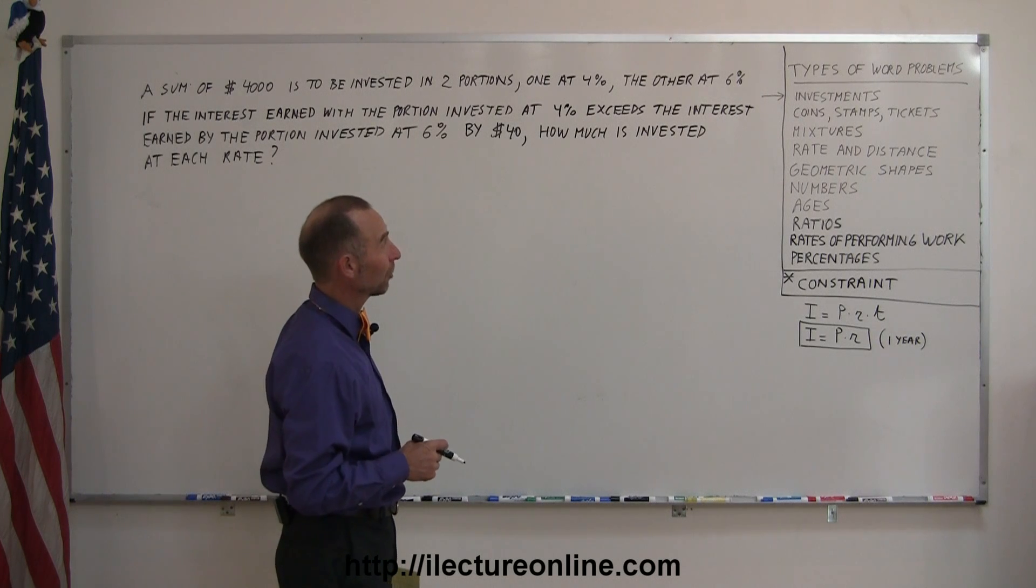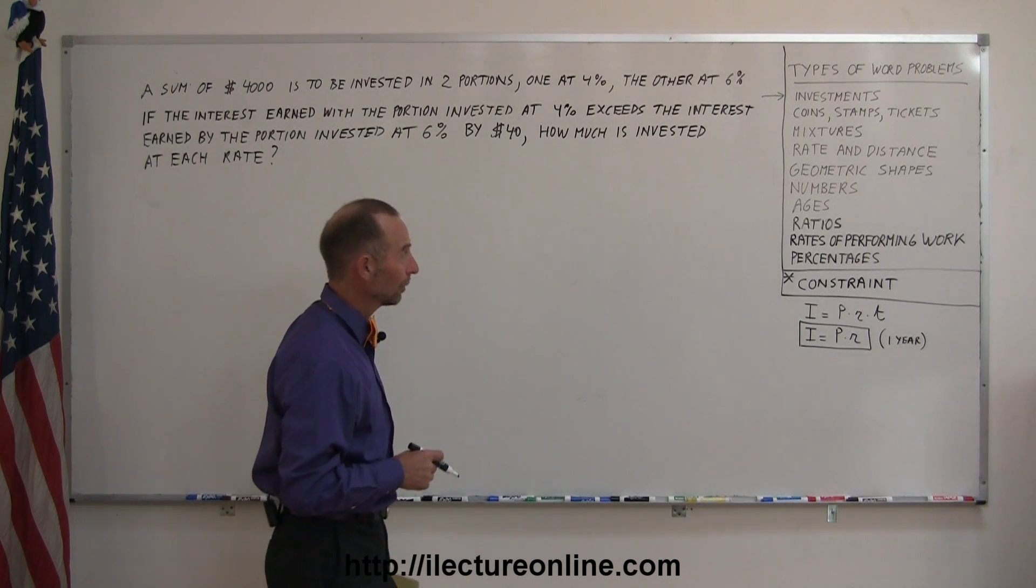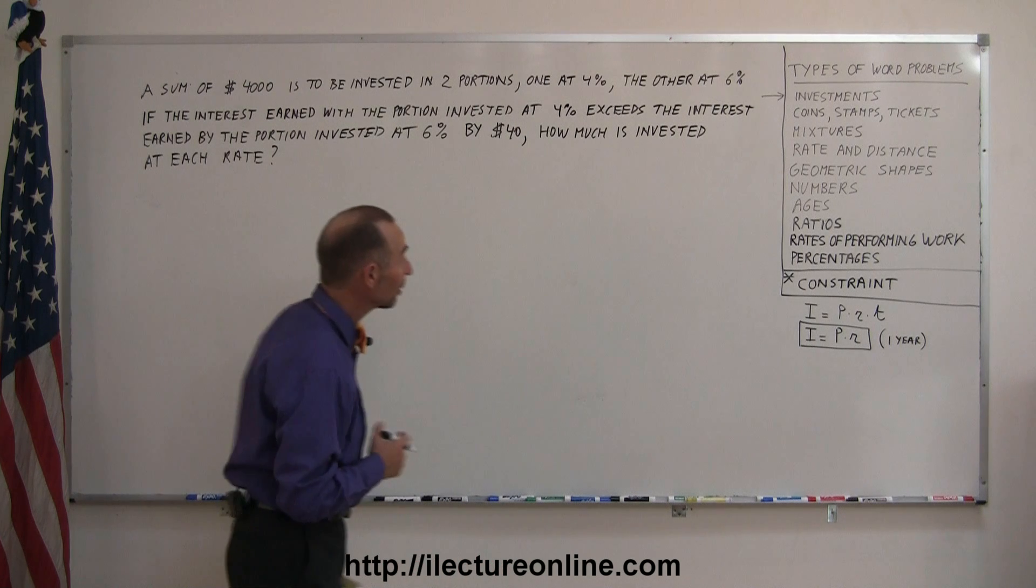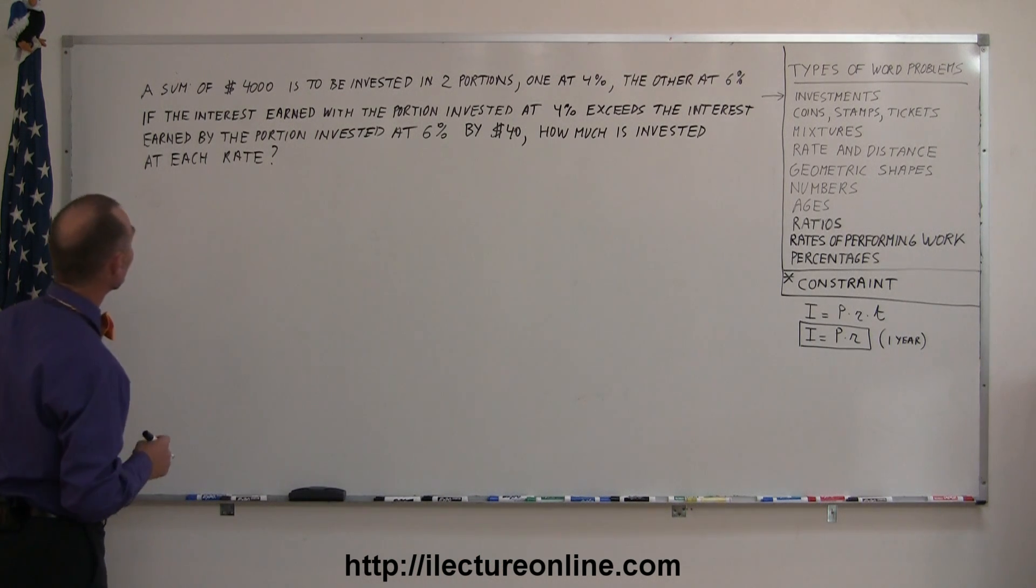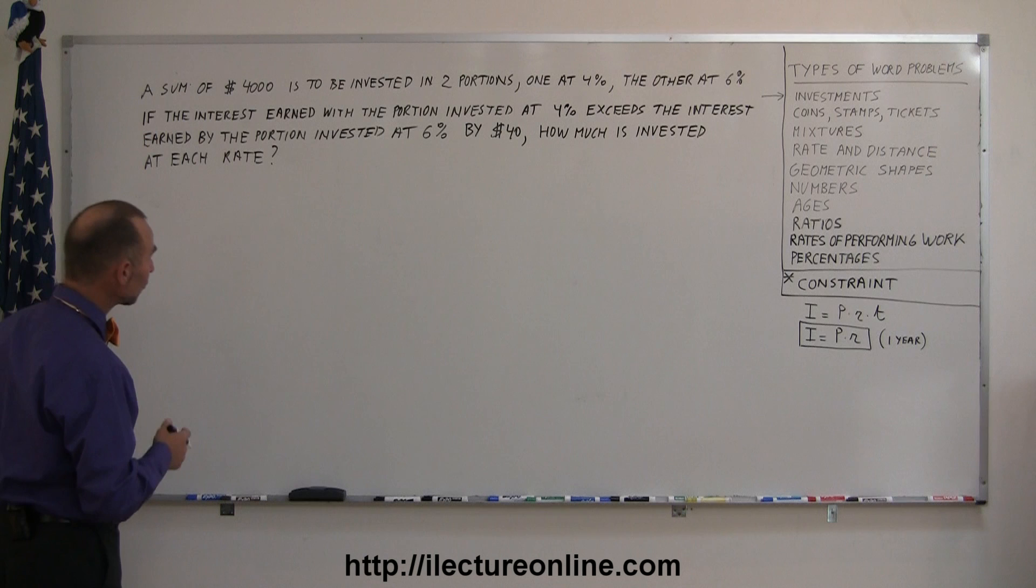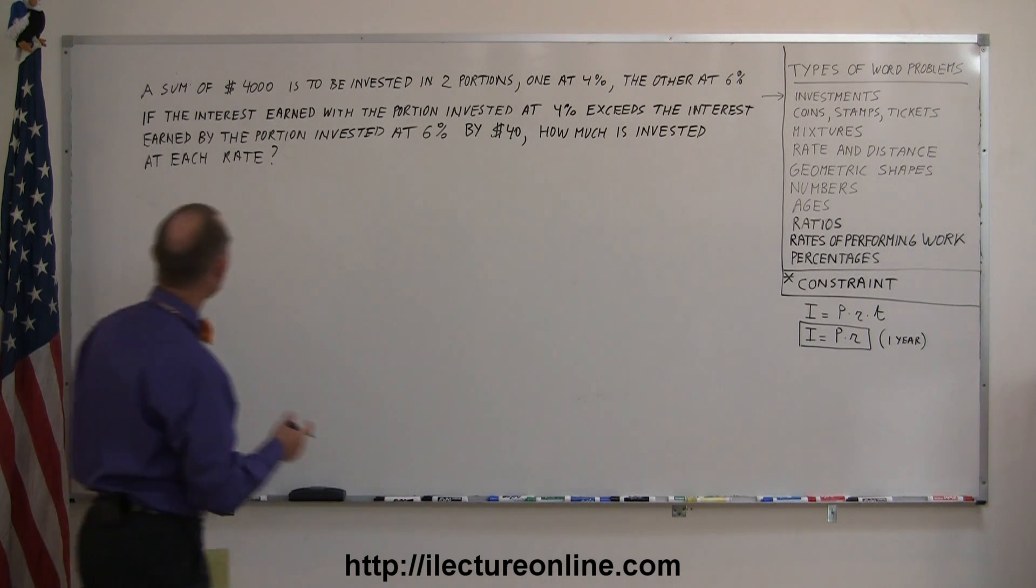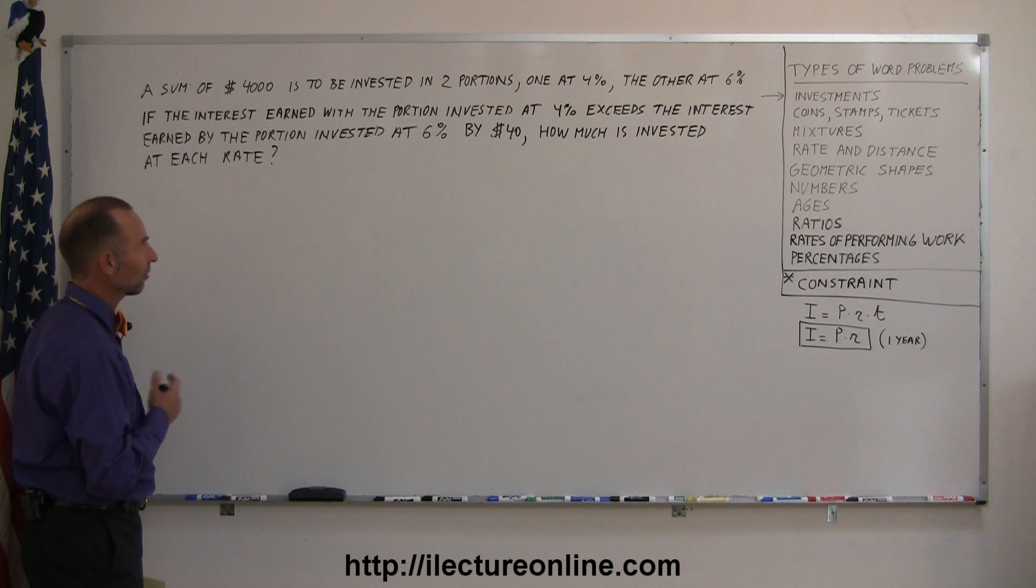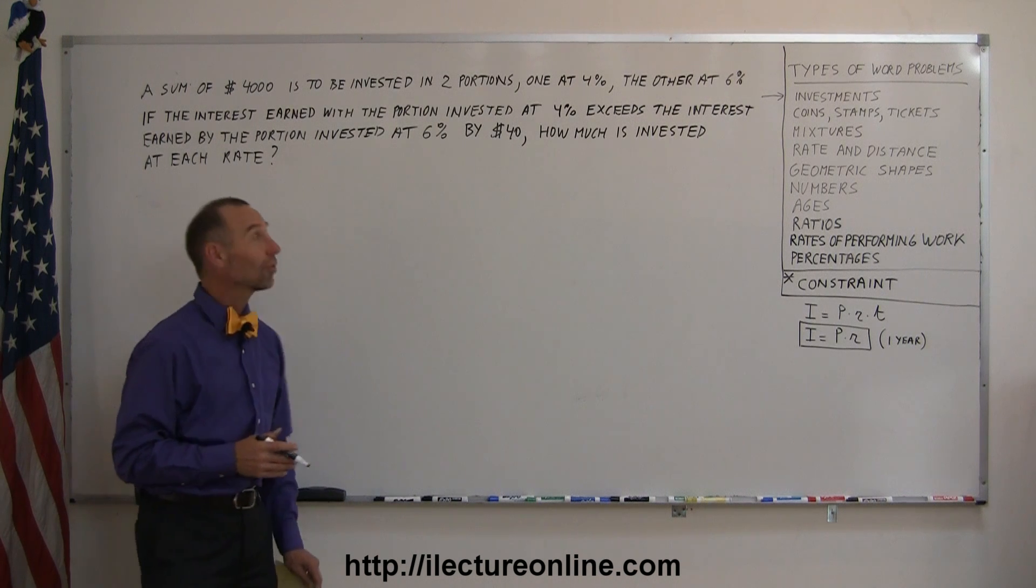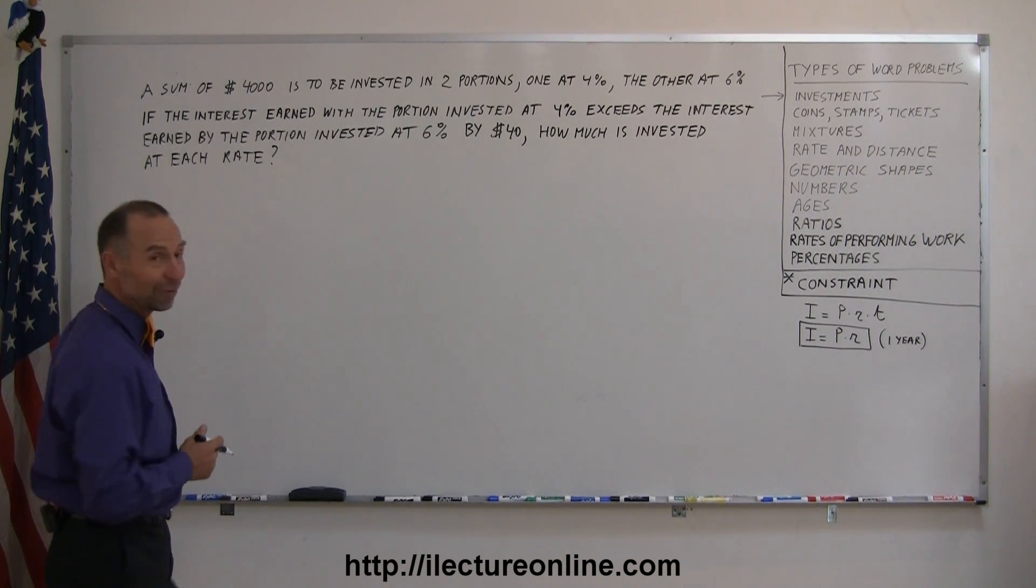Here's another word problem in algebra, one dealing with investments. Let's read the problem. A sum of $4,000 is to be invested in two portions, one at 4%, the other at 6%. If the interest earned with the portion invested at 4% exceeds the interest earned by the portion invested at 6% by $40, how much is invested at each rate? Doesn't that give you a headache already before we even get started?